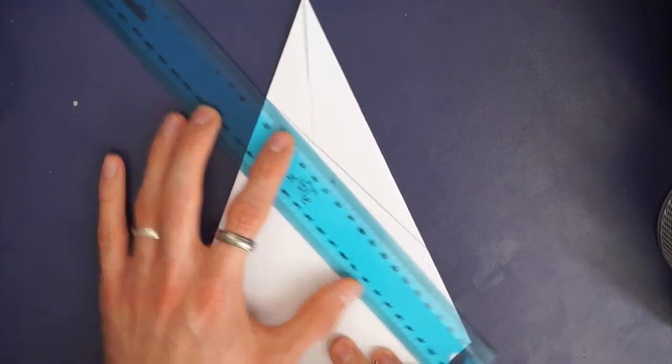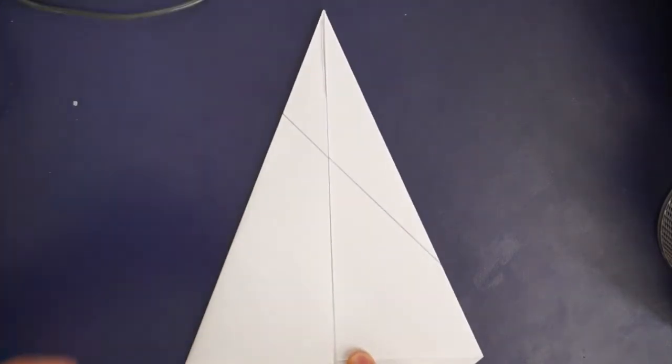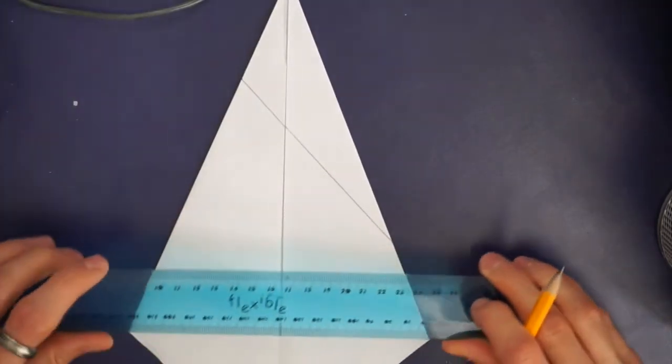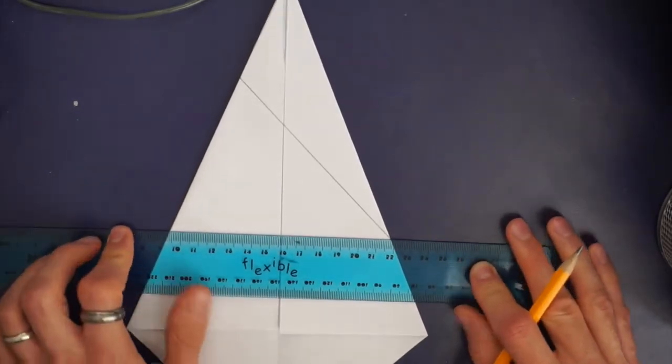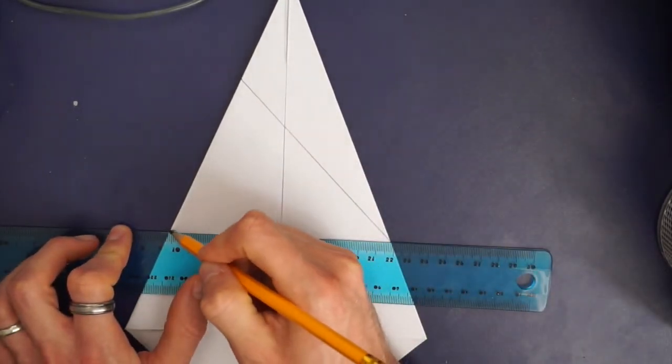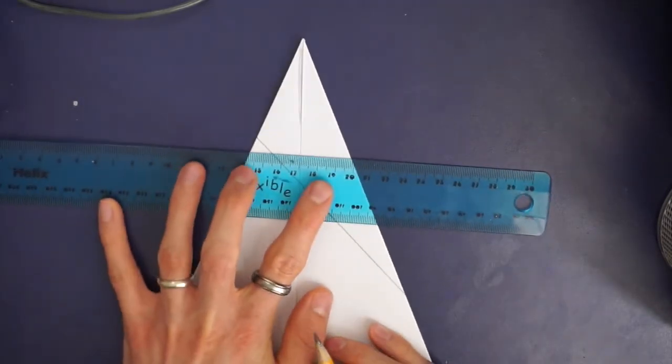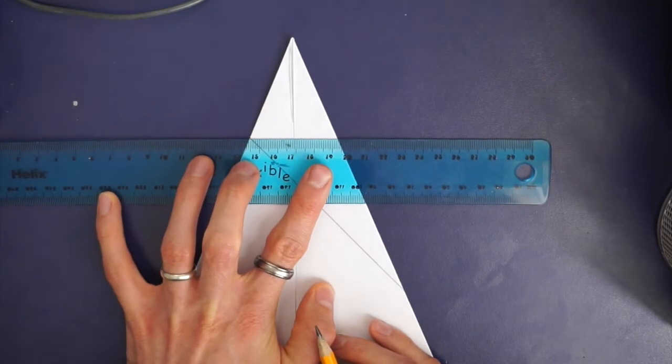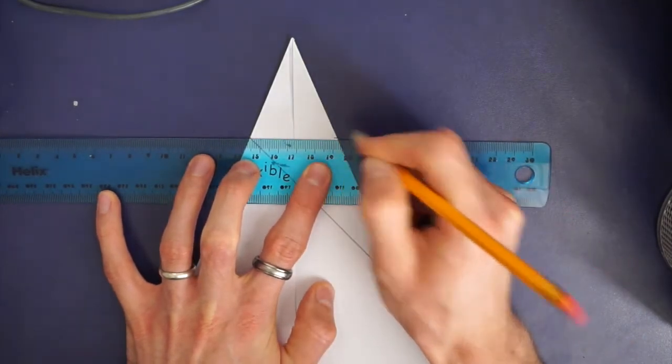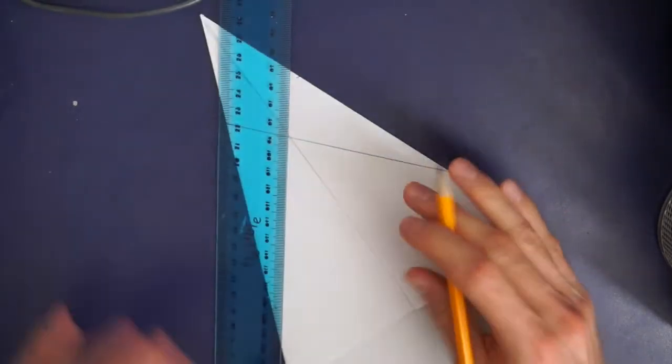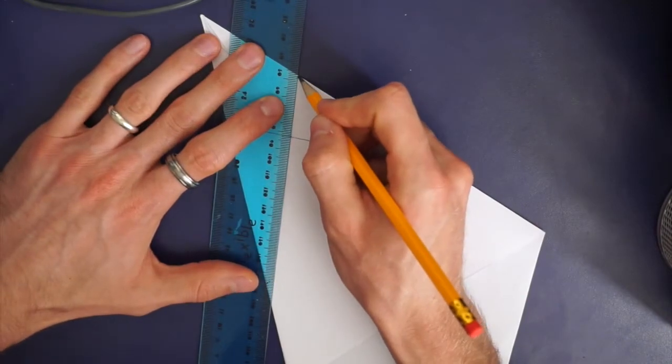Then again you want to make a diagonal line and this is why a ruler is handy because you need to start at the same bit on the other side so draw yourself a little marker and you want it to finish in the same place on the other side too. And then connect those dots with a diagonal line.